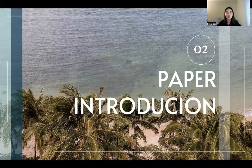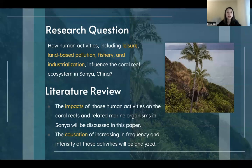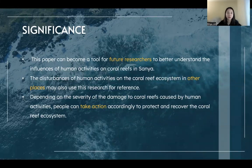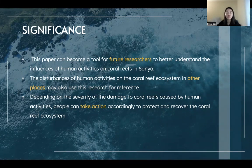The second part is the introduction of my paper. The research question is: how do human activities, including leisure, land-based pollution, fishery, and industrialization, influence the coral reef ecosystems in Sanyang, China? In my literature review, the impact of those human activities on coral reefs and related marine organisms in Sanyang will be discussed, along with the causation of increasing frequency and intensity of those activities. As for the significance of this review paper, it will serve as a tool for future researchers to better understand the influence of human activities on coral reefs in Sanyang, and as a reference for studying disturbances in other places. People can also take action to protect and recover the coral reef ecosystem.